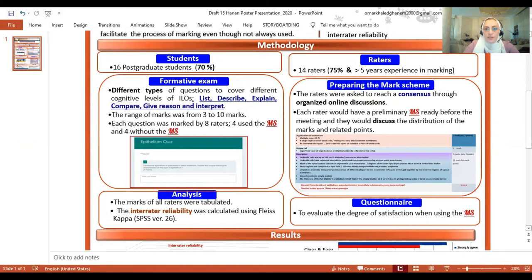And this was to evaluate the effectiveness of the mark scheme in each type. The range of marks was from three to ten marks. Each question was marked by eight raters, four of whom used the mark scheme and four did not use the mark scheme. This is an example of one of the questions that was answered on Google Form.